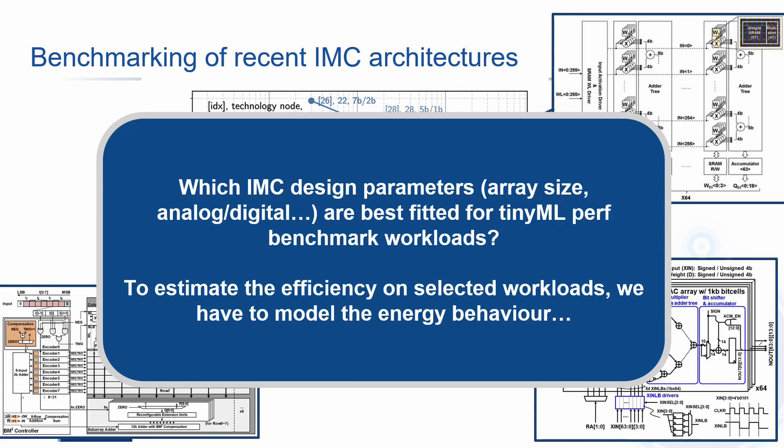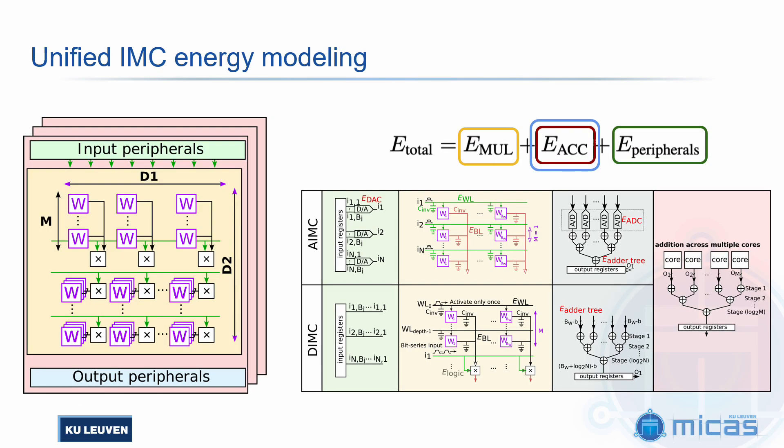So the question again becomes: which AMC design parameters should we choose? We have to choose which kind of AMC topology to adopt for TinyML Perf workloads. To help us in this search, we have to come up with a cost model — an energy model — to estimate energy consumption of different designs. This cost model consists essentially of three main components. The first one is related to the cost of multiplying the inputs with the weights within the array. The second component is the cost of accumulating the partial sums. And the third one is the cost derived from the peripherals, which are essentially only the DACs in the AMC case.